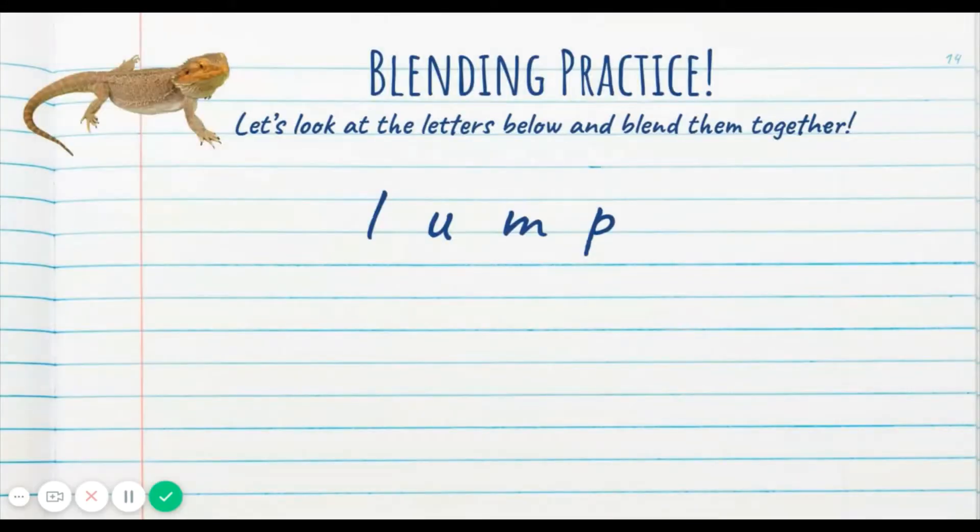All right. So now it's time for some blending practice. Let's look at the letters below and blend them together. So we have a word here, but man, I'm not sure what it is. We're going to say each sound. Then at the end, say all the sounds together to figure out what this word could possibly be. You ready? All right. Let's get started. The first sound that we see is U-U-U, like L. U-U-U. All right. So we've said each of the sounds. Now it's time to put it together kind of quickly so we can start hearing what this word could be. Watch closely.